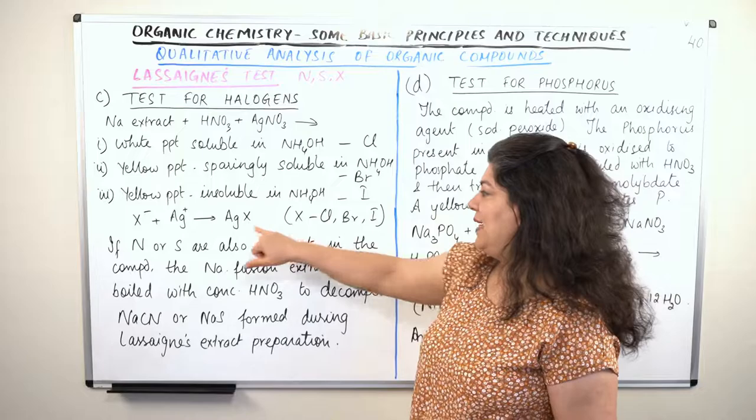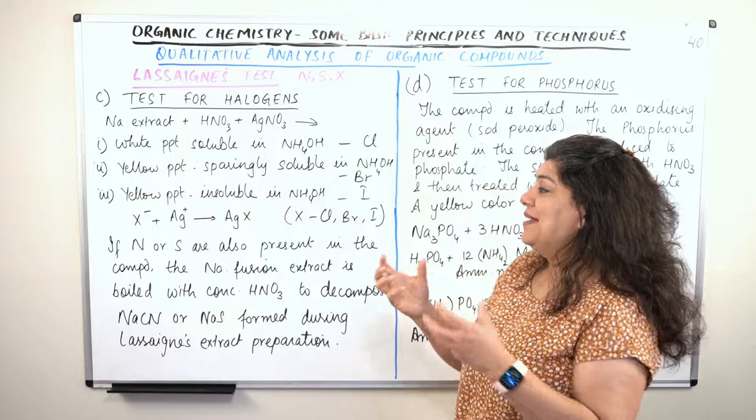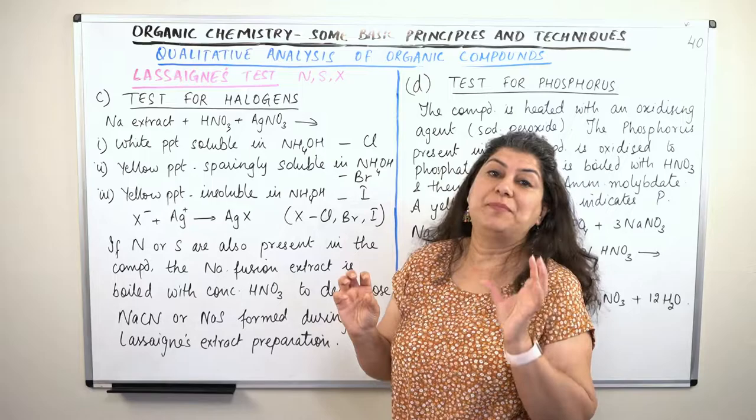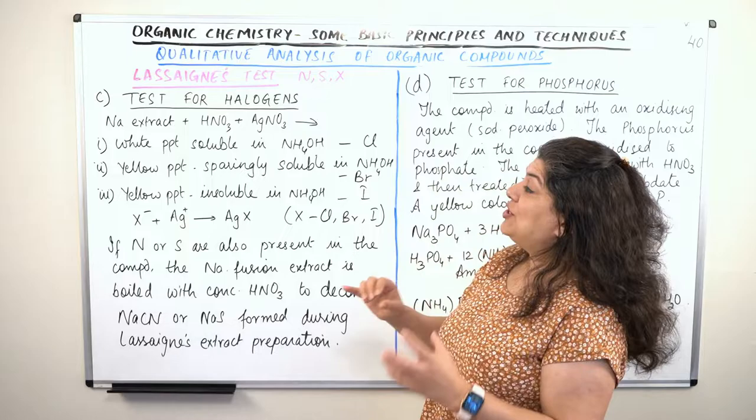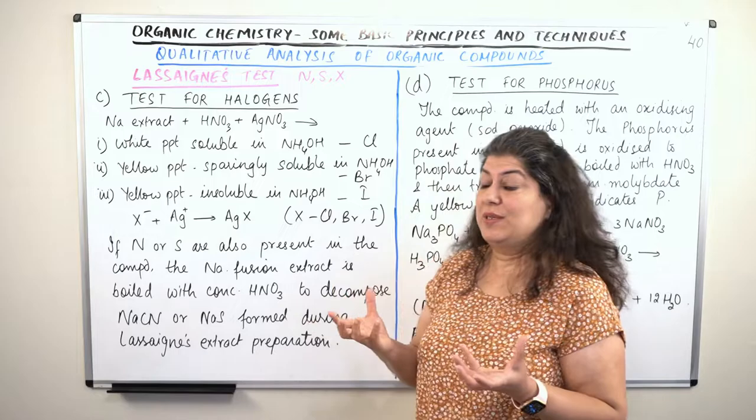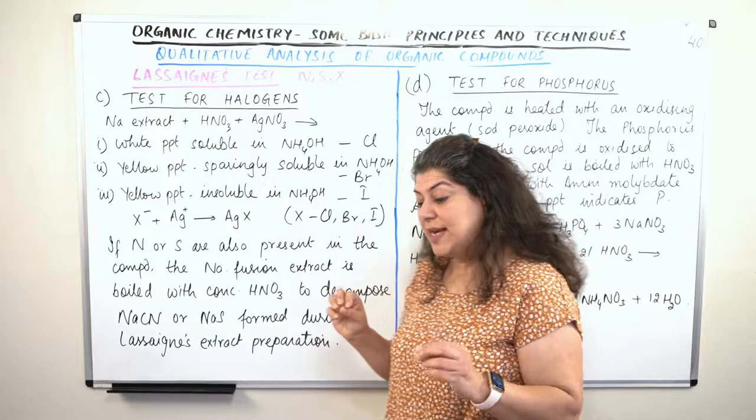The silver halide could be silver chloride AgCl, it could be AgBr, or it could be AgI. As soon as the halide is formed, it is a precipitate — it is insoluble in water. So you find an insoluble white precipitate, and you add ammonium hydroxide to it.